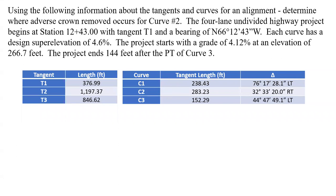We're given some information about tangents and curves for an alignment and we're asked to determine where the adverse crown removed occurs for curve number two. This is a four-lane undivided highway that starts at station 12+43 with tangent T1 at a bearing of north 66 degrees 12 minutes 43 seconds west.